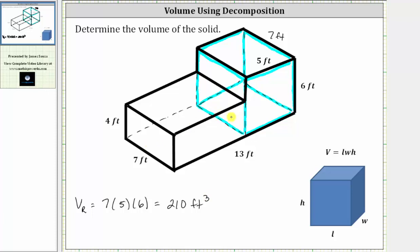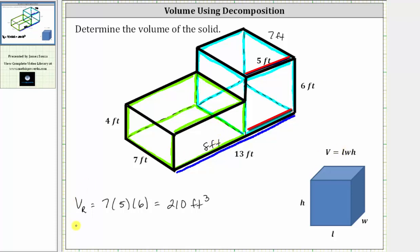Now let's highlight the edges of the box on the left in green and determine the volume. For the box on the left, the height is four feet and the length of this edge is seven feet. We don't have the length of this width edge directly, but the long edge is 13 feet and another edge is five feet. Therefore 13 feet minus five feet gives us eight feet. With dimensions of eight feet by seven feet by four feet, the volume of the box on the left, V sub L, equals eight times seven times four, which is 224 cubic feet.